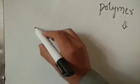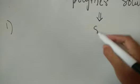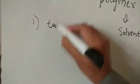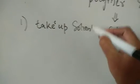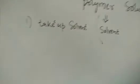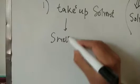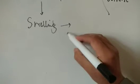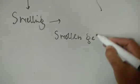Polymer solubility occurs in two steps. Step number one: once we dissolve the polymer in a given solvent, what happens is that the polymer takes up the solvent — it absorbs the solvent. The polymer chains absorb the solvent molecules, and this results in swelling. The polymer chains get swelled up and form a swollen gel. So after step one, you have a swollen gel formed.